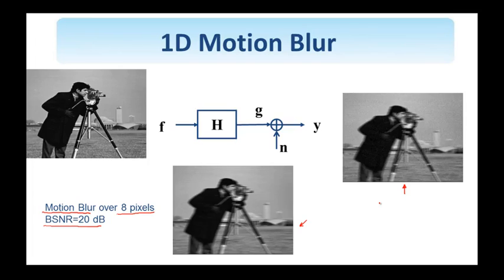So with this setting, given this image here, this is our observation y, we know h. h is the description of the degradation, and we try to get an estimate of the original image.